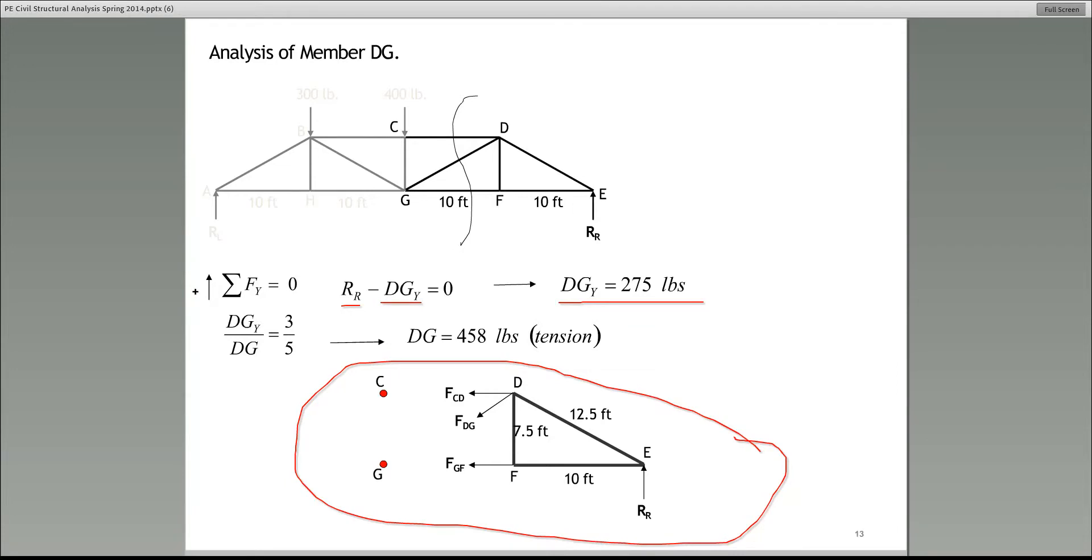So now that we have the Y component of the force in DG, then we can use... Remember I told you the geometry of the truss is given, so just use a similar triangle situation. DGY over DG is equal to 3 over 5. 3 and 5, it's a 3-4-5 triangle. It was given to us at the very first slide that talked about this truss. So solve the force in member DG, it comes out to be 458 pounds. And whether it's tension or compression, well guys, look, we assumed DGY to be pulling away from the joint D, and it came out to be positive. 458 positive. So since it came out to be positive, that says the initial assumption was indeed correct, so it is in tension.